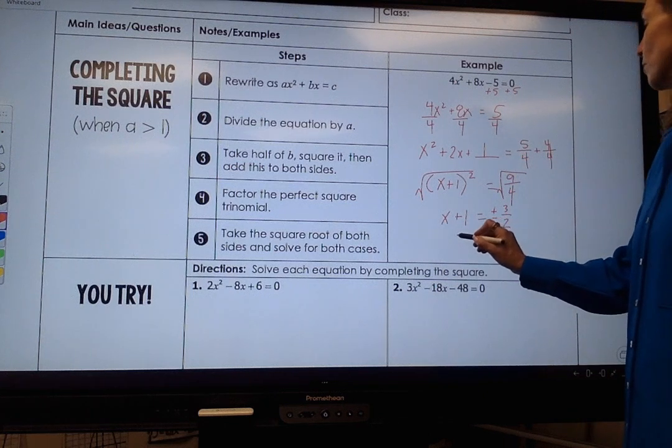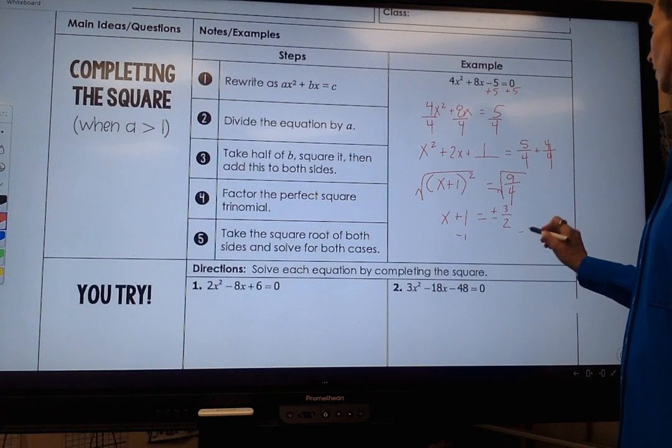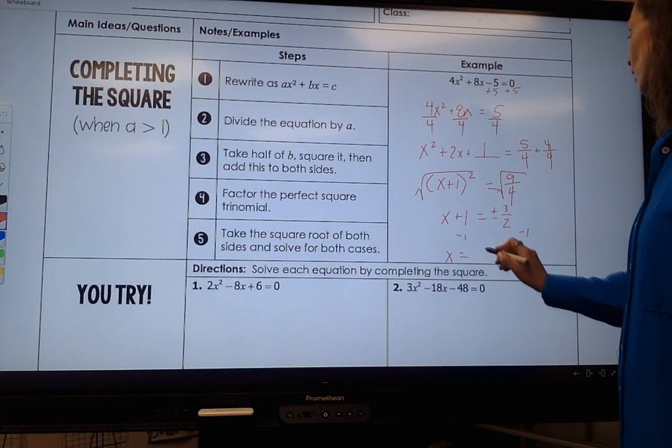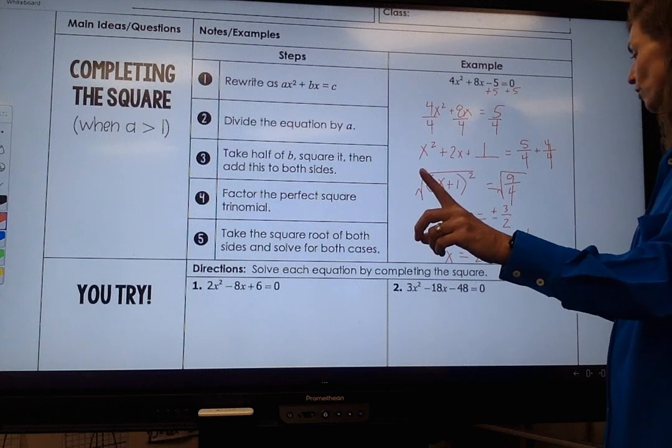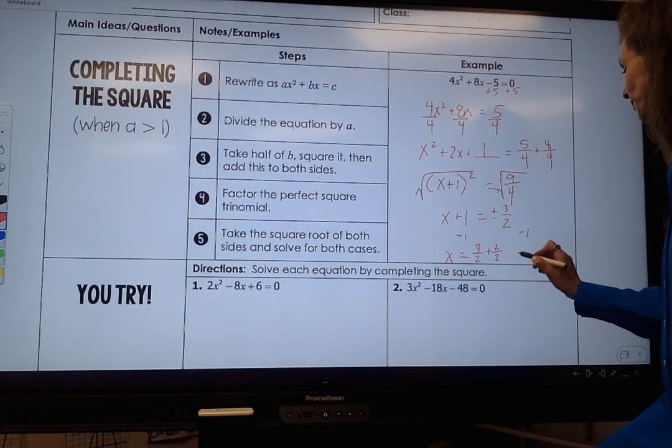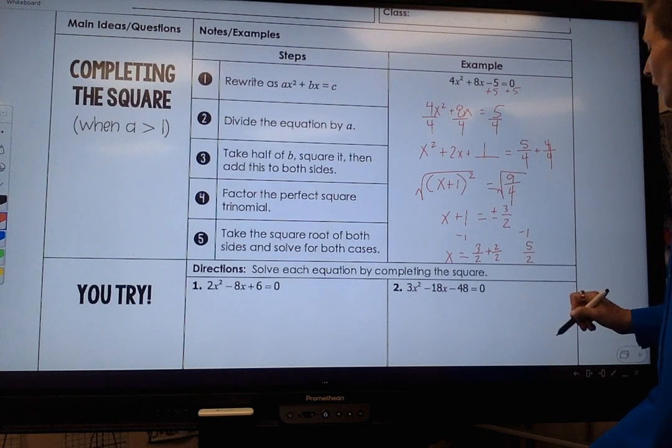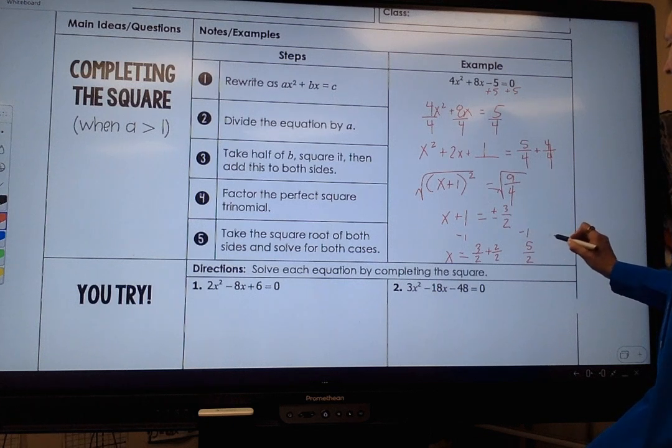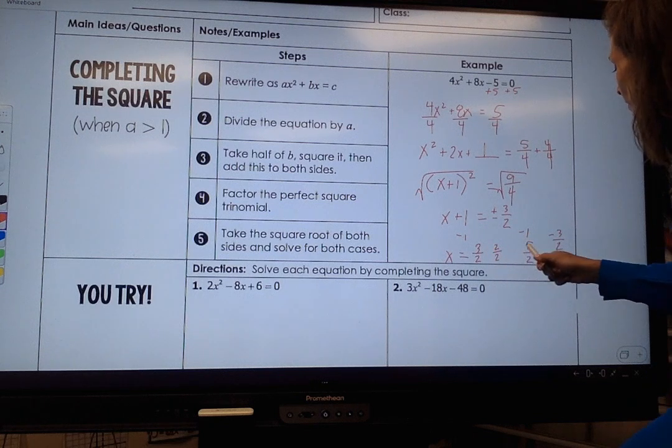So I'm going to subtract 1 on both sides and I get x equals 3 halves plus 1 which is 2 over 2. It's the same thing as 1. So I get 5 halves. And then I have negative 3 over 2. Oh wait, this is minus 1. I'm sorry guys.